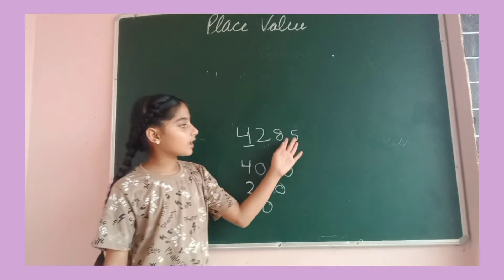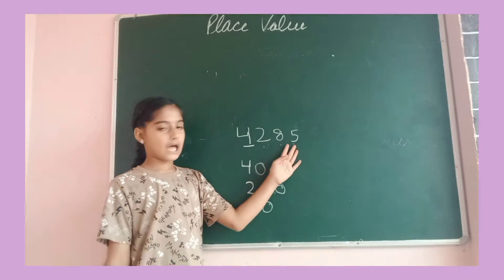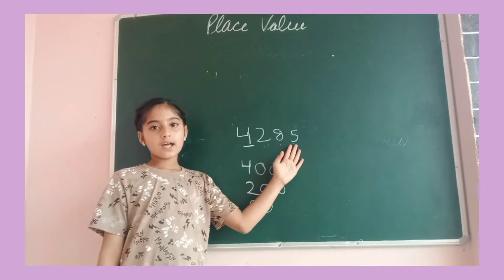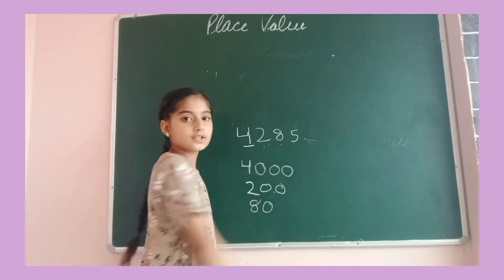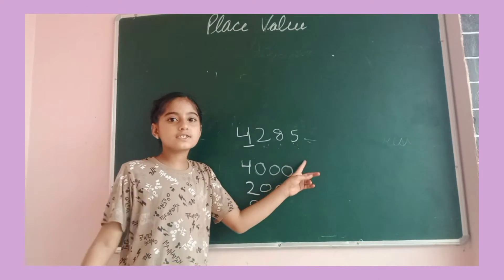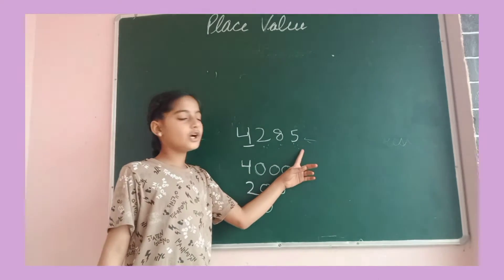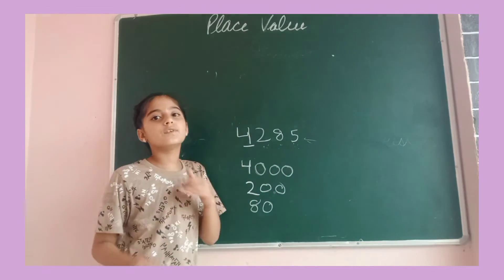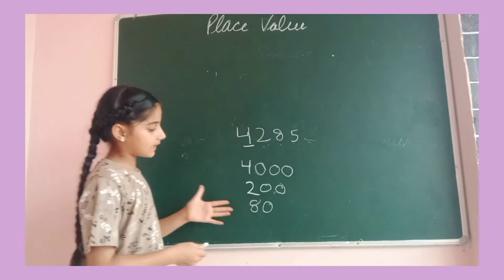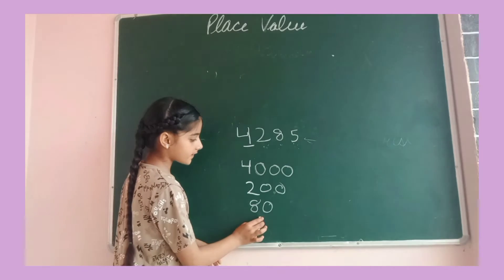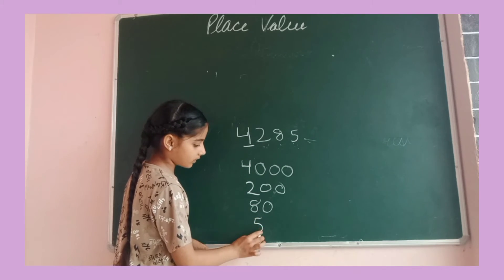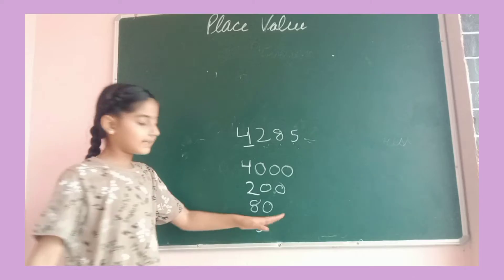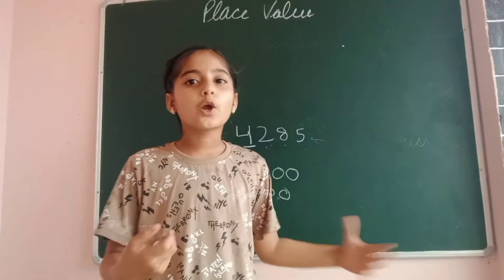And for the last digit, after digit 5 there are no digits. So we will not use any zeros — means we will not write any zeros after 5.